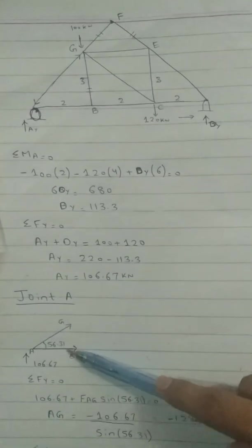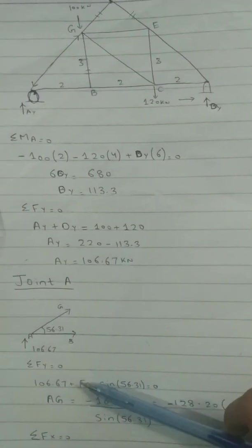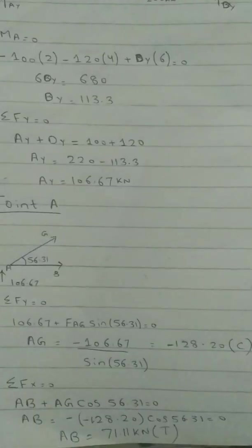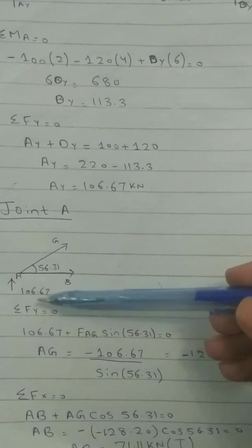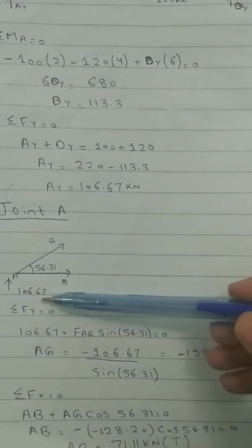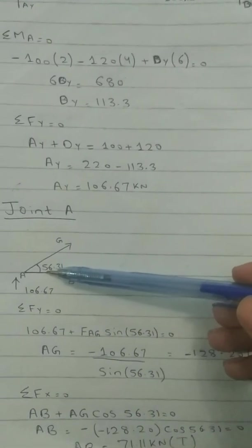Now we will analyze joint A first. During the free body diagram of joint A, you can see that the force, the reaction we have calculated is 106.67.